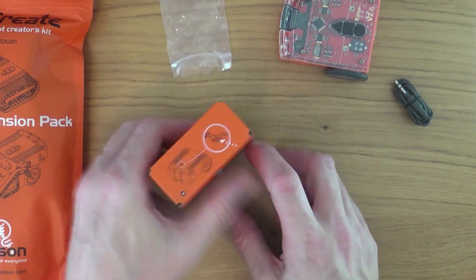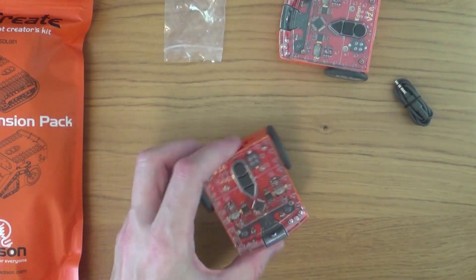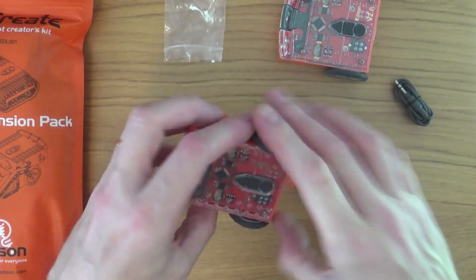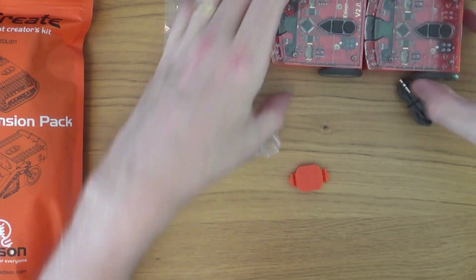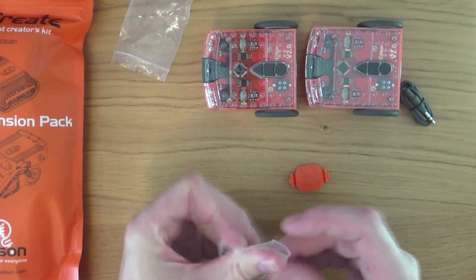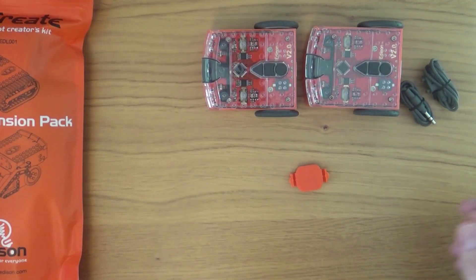Another thing which sets it apart is its cost. For the price of some of the robots in the STEM Robots and Drones video series, you could buy three, four, or even five Edison robots and still have change left over.